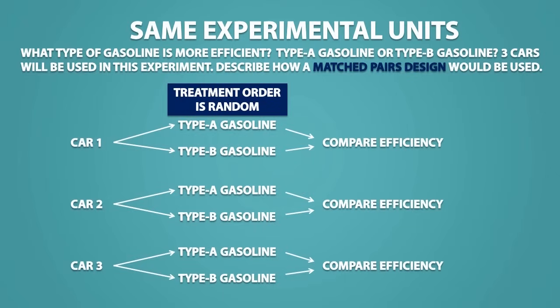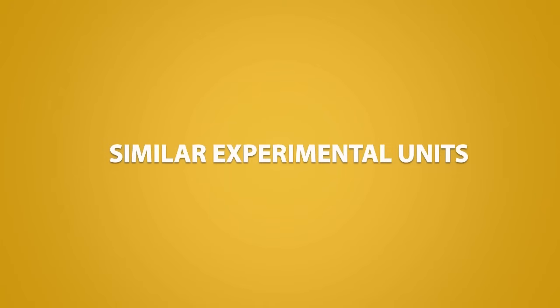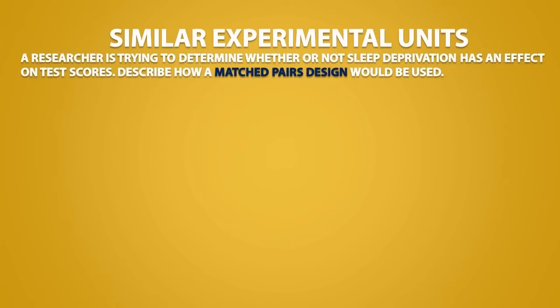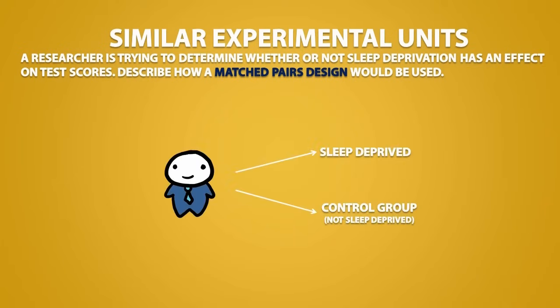There are cases when we can't use the same experimental units for a matched pairs design, and we would have to use similar experimental units. For example, a researcher is trying to determine whether or not sleep deprivation has an effect on test scores. We could try giving both treatments to the same experimental units, as we did in the other example.